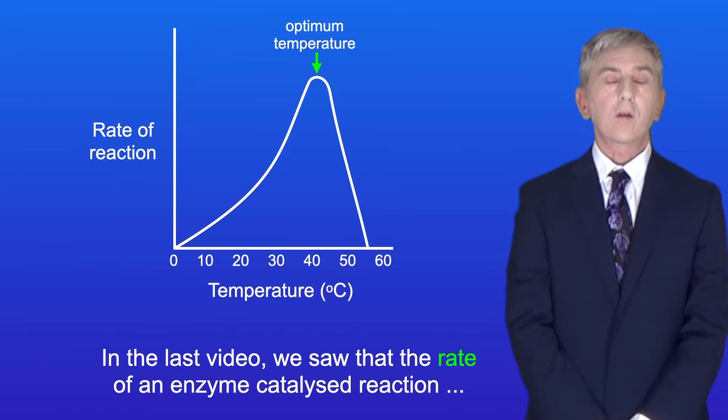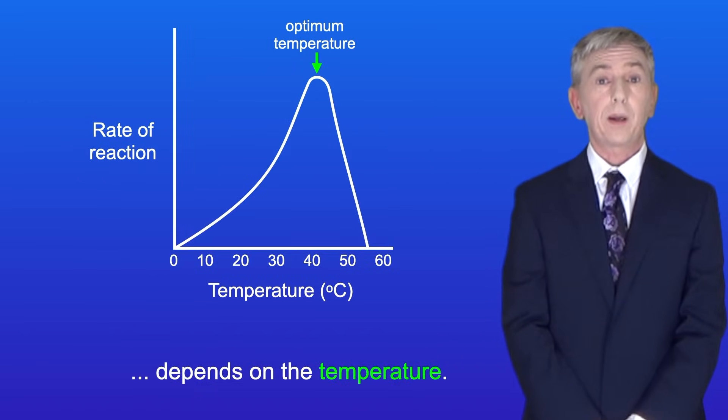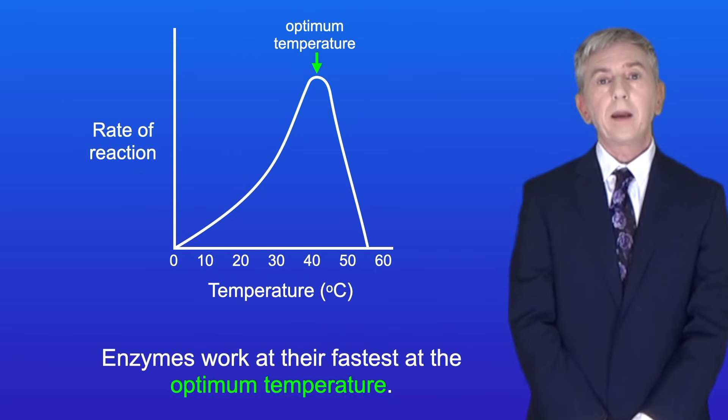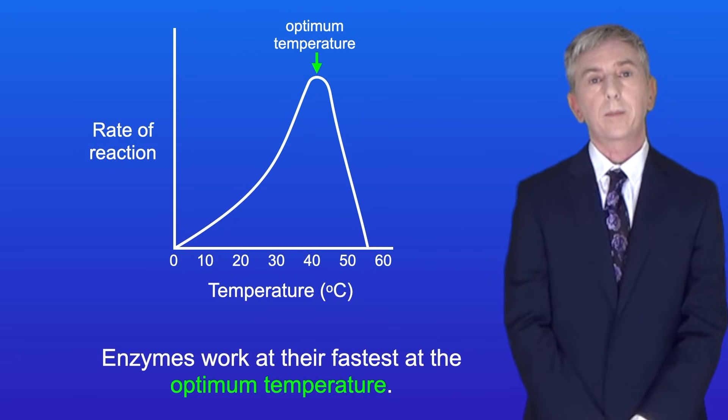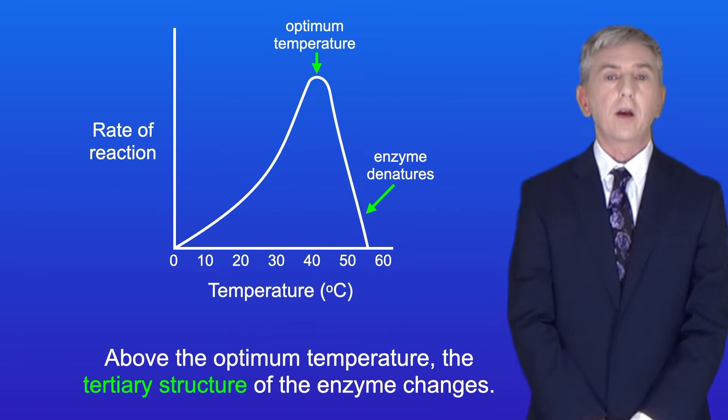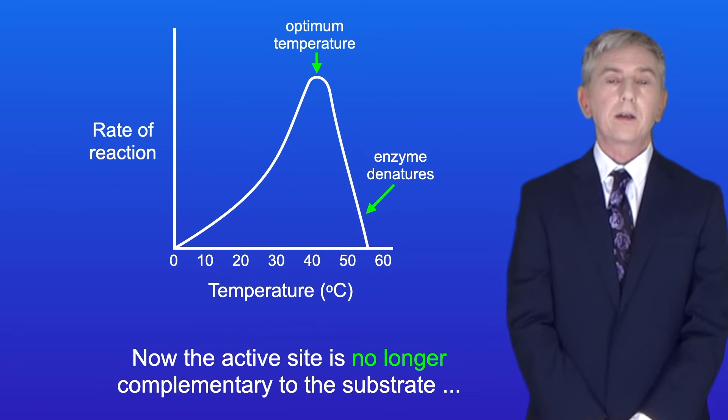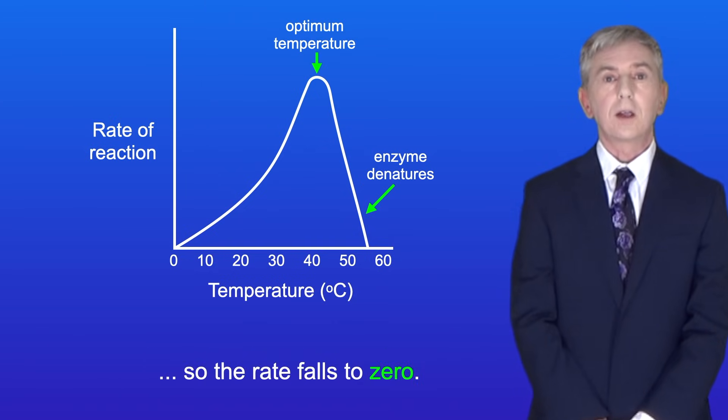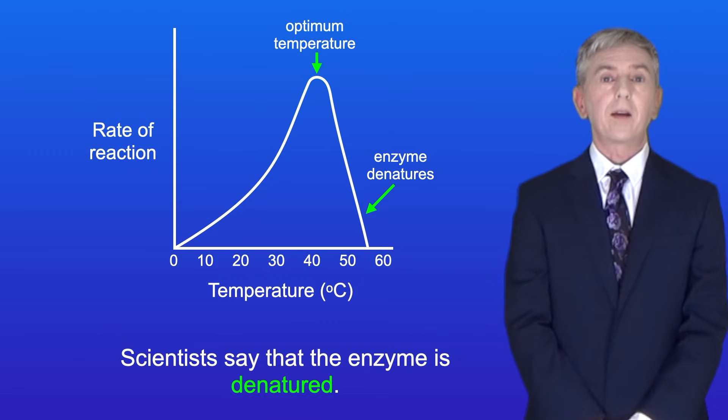In the last video we saw that the rate of an enzyme-catalyzed reaction depends on the temperature. Enzymes work at their fastest at the optimum temperature. Above the optimum temperature, the tertiary structure of the enzyme changes. Now the active site is no longer complementary to the substrate, so the rate falls to zero. Scientists say that the enzyme is denatured.